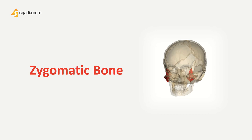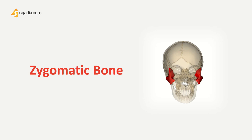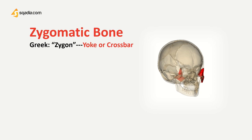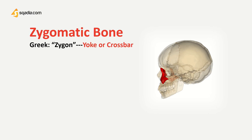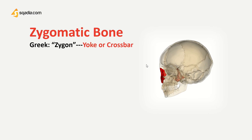Our cheekbone, also called the zygomatic bone, helps in forming our face and plays a major role in chewing, mastication and even smiling. The word zygomatic comes from the Greek zygon meaning a yoke or crossbar by which two draft animals such as oxen would be hitched to a plow or wagon. The zygomatic process is occasionally referred to as the zygoma, but this term usually refers to the zygomatic bone or occasionally the zygomatic arch.